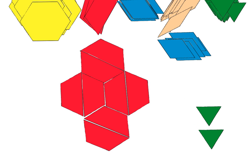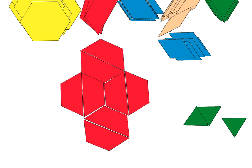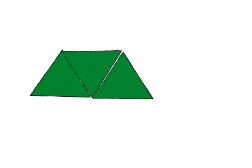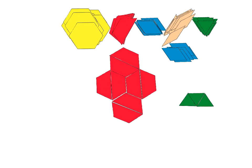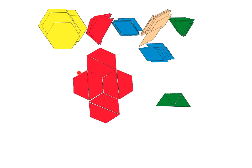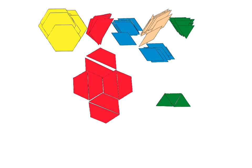Triangles — I'll bet they tessellate. If you put the triangles together, you get a trapezoid, and we already know that trapezoids tessellate. So if trapezoids tessellate, that means these triangles will too, because they join together to create a trapezoid. So the yellow, red, blue, and green shapes all tessellate. I wonder if the tan shapes tessellate — I'll leave that one up to you to figure out.